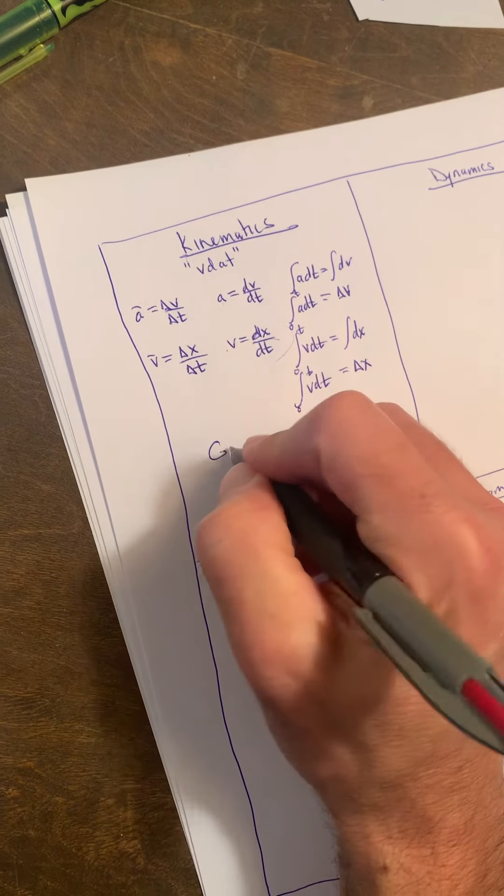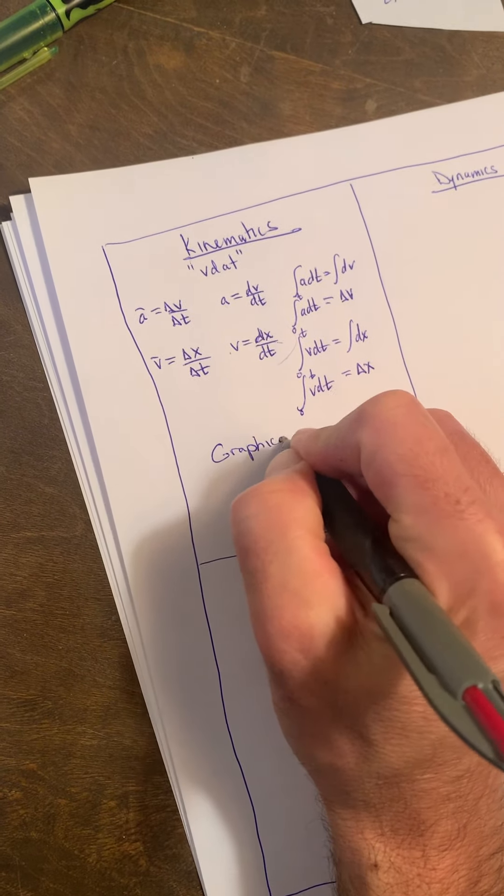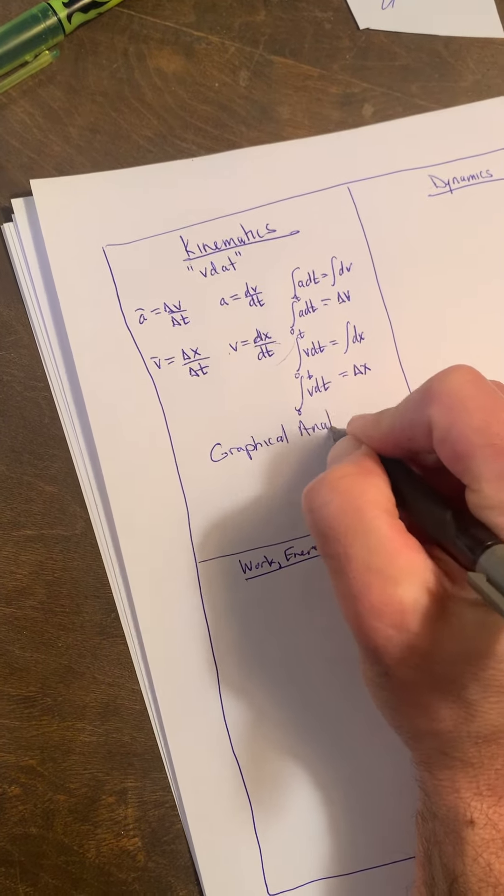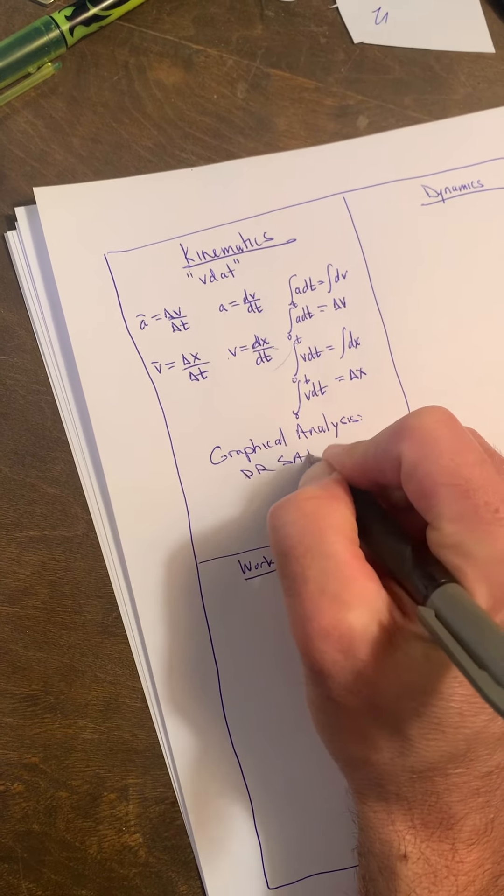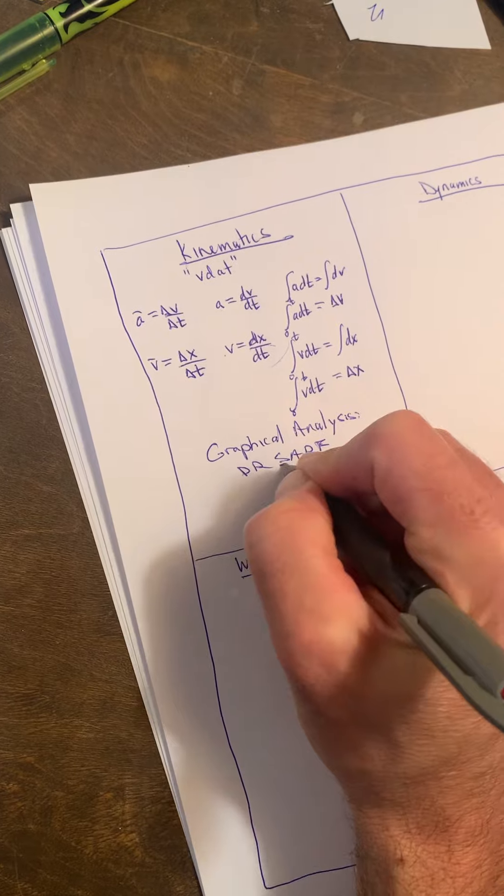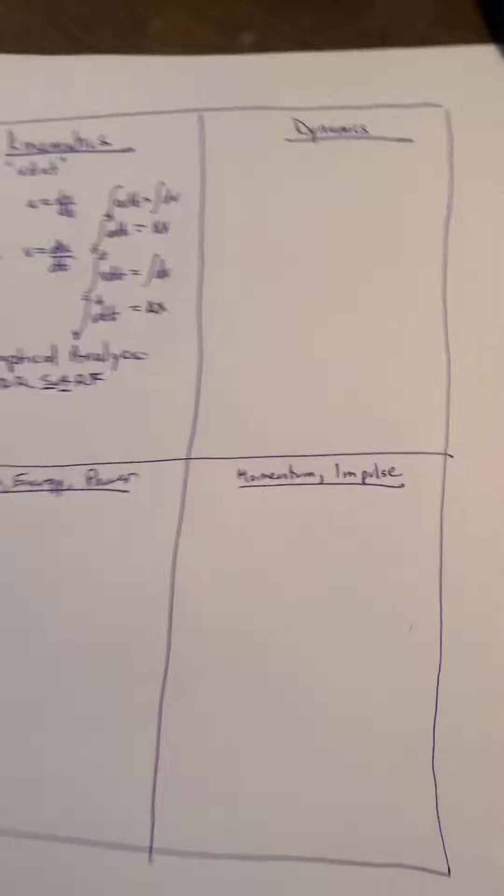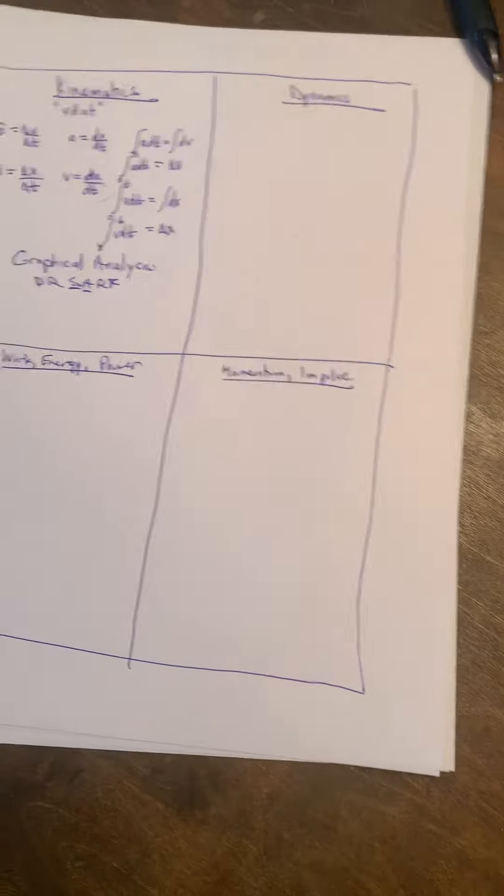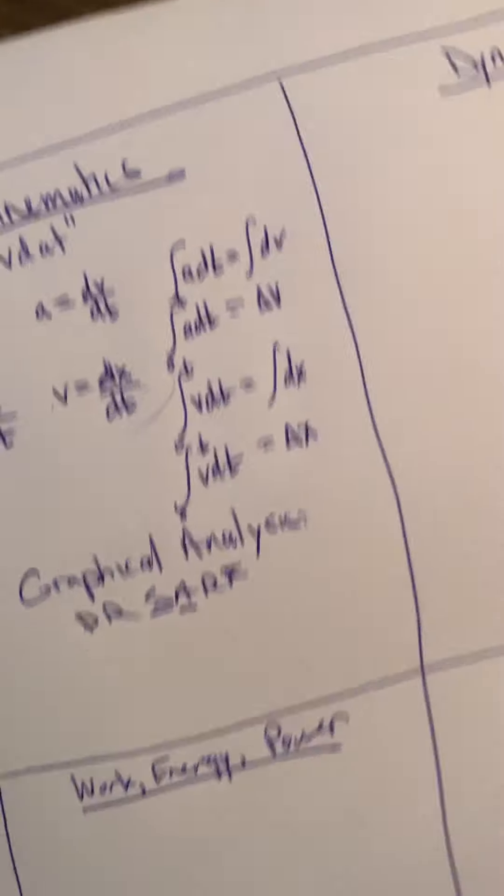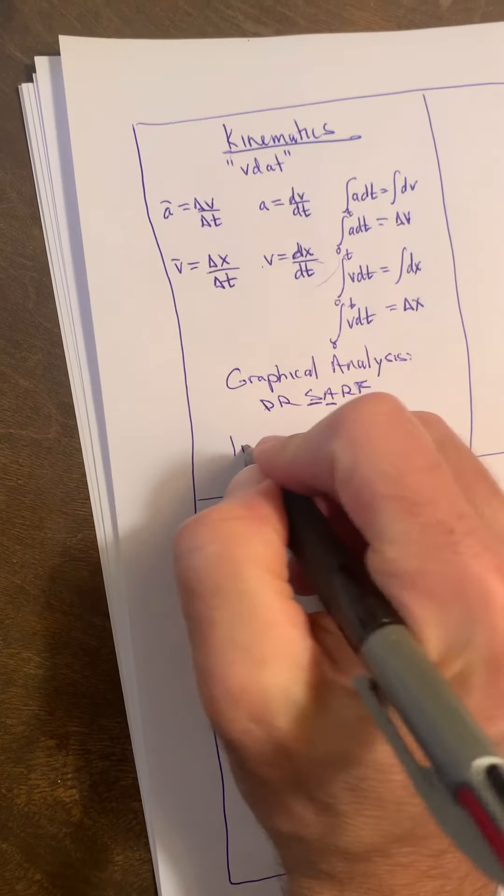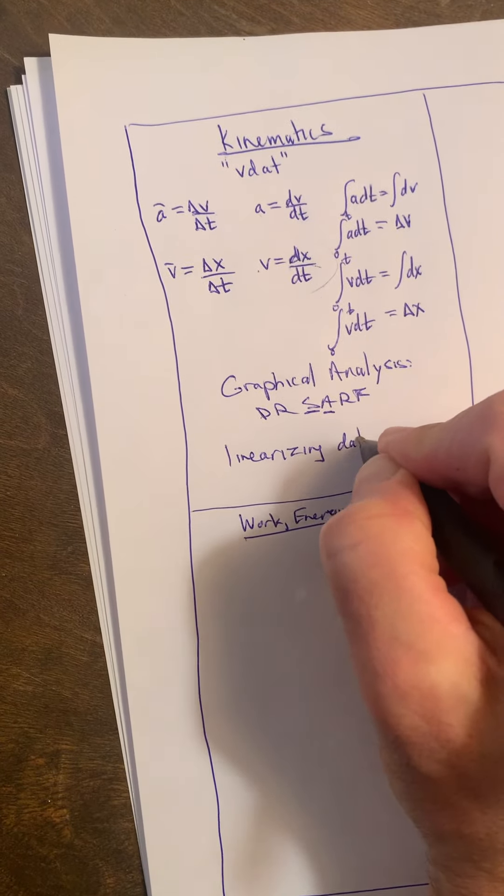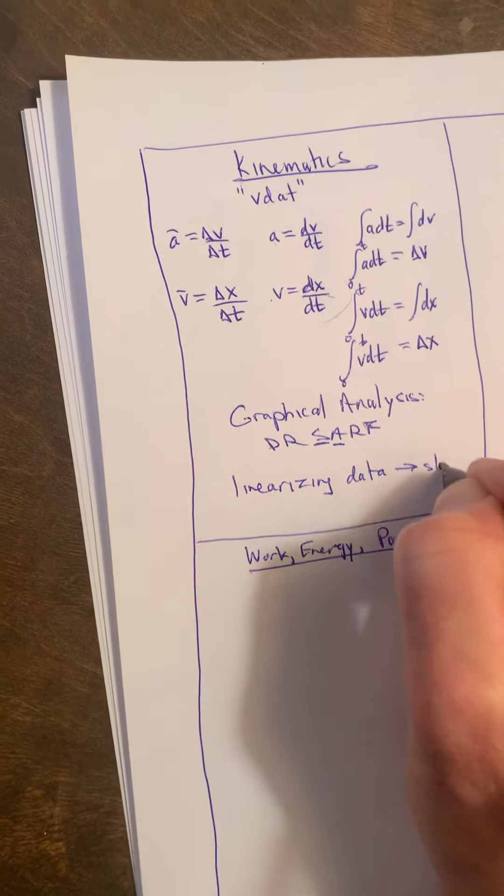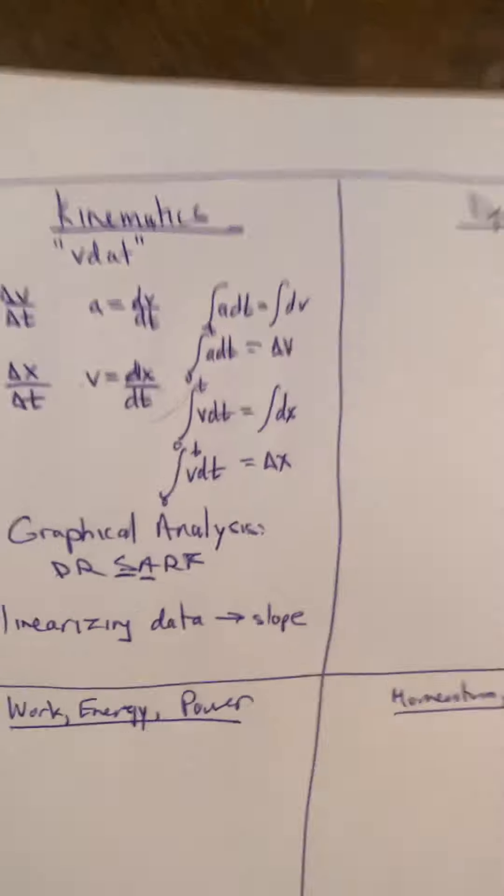Beware that we also did a little graphical analysis within this, and our graphical analysis is still Dr. SARF, particularly slope and area. Focus on what's happening with those two. One other thing we started practicing this unit was linearizing the data and then using that to generate a slope to figure out some physical quantity, often little g.